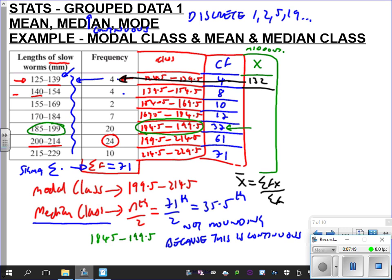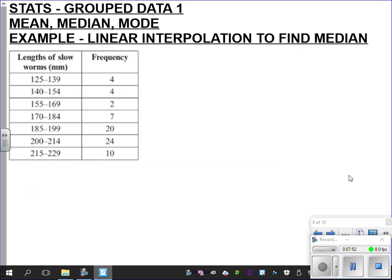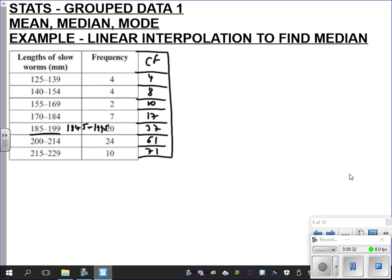But what we really want to talk about is linear interpolation. How to find the specific value of your median. So we found what the median class was. But we didn't actually find what the median is itself. So we'll do that cumulative frequency again. So it's the same set of values. 61, 71. And the median is somewhere, as we said, in this median class here. But remember, it's not actually that class. 185 to 199. It's 184.5 to 199.5, isn't it?